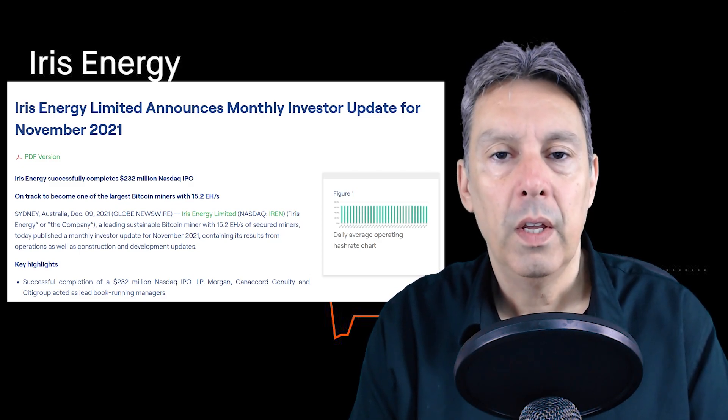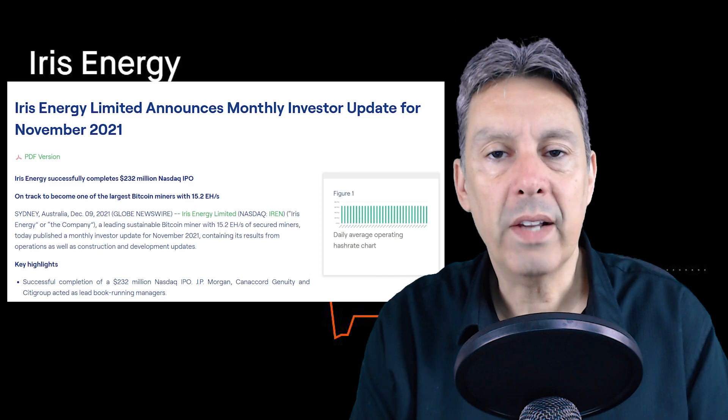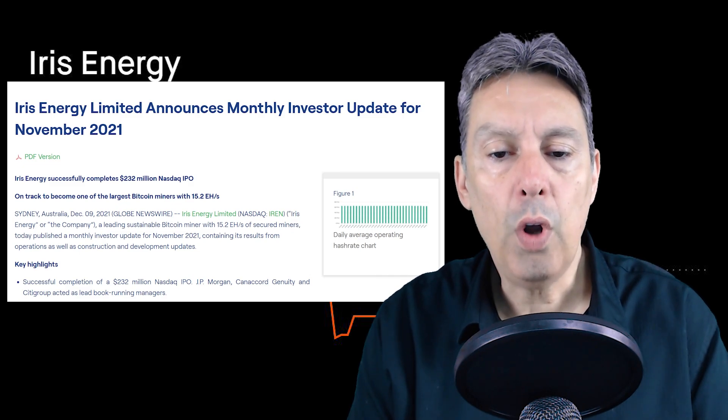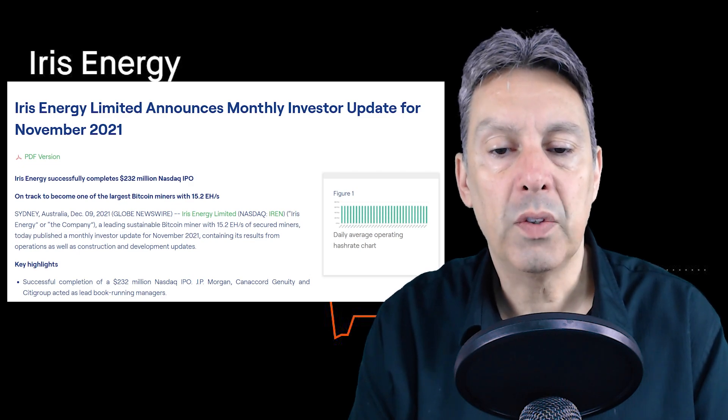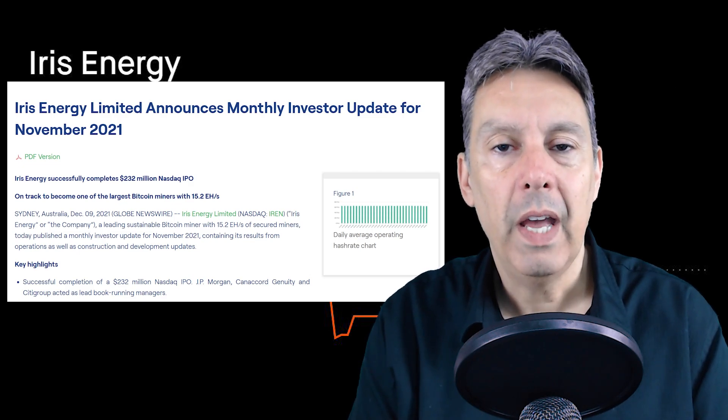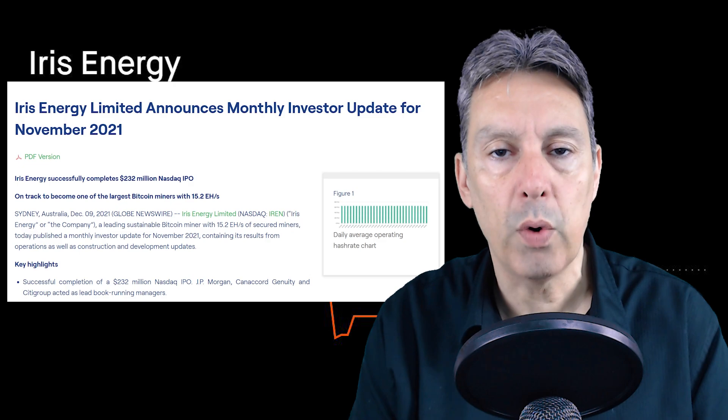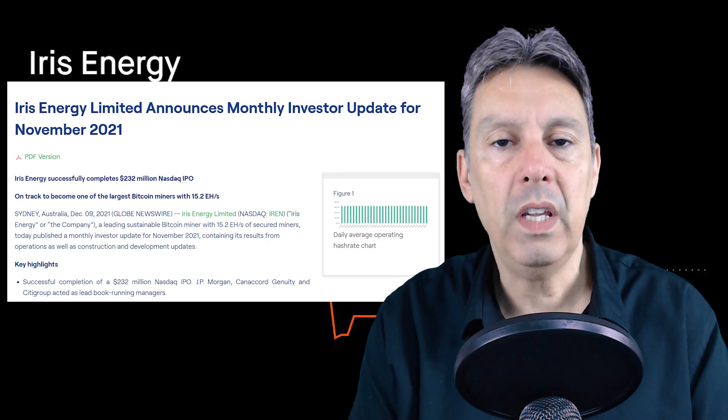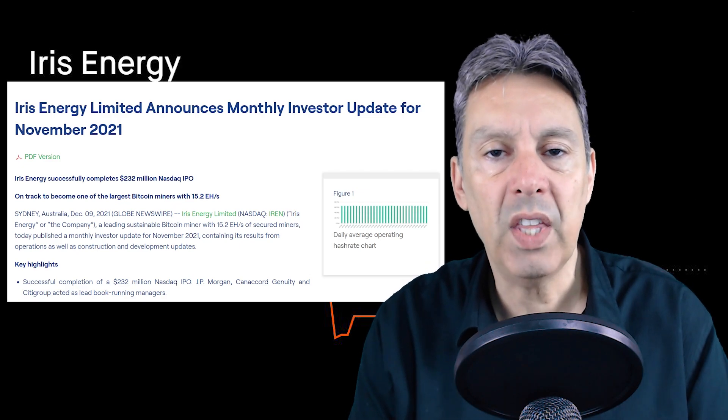They're looking to get to 15.2 exahash per second by the end of 2023. There's no company right now in North America that has 15.2 exahash per second. However, there will be several most likely by the time 2023 ends that have even more than that. So this will make them a big player, but by no means the biggest.